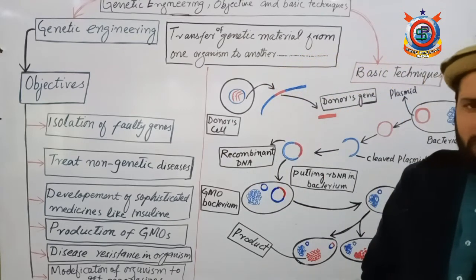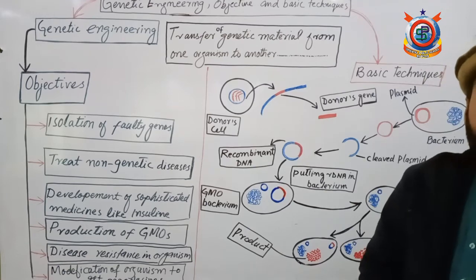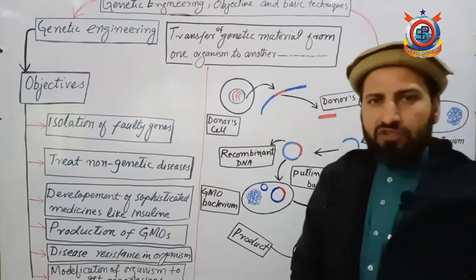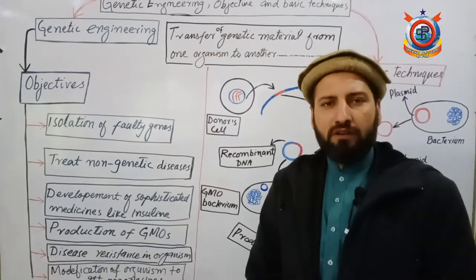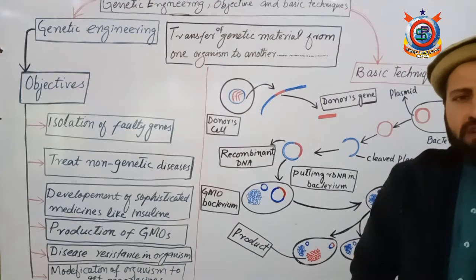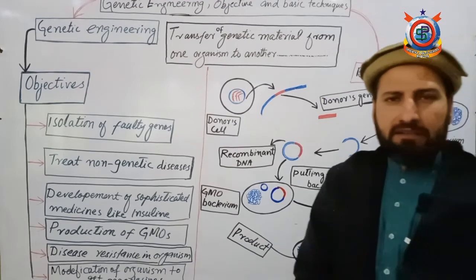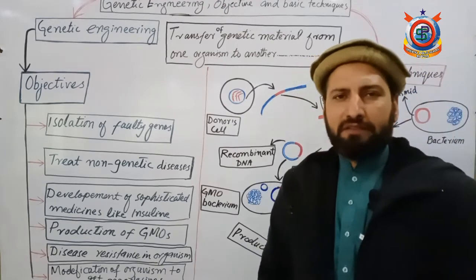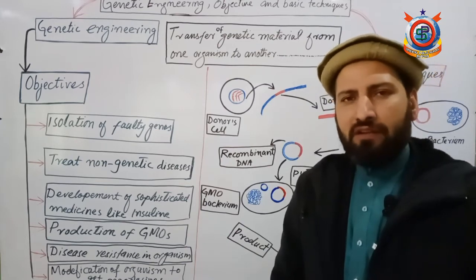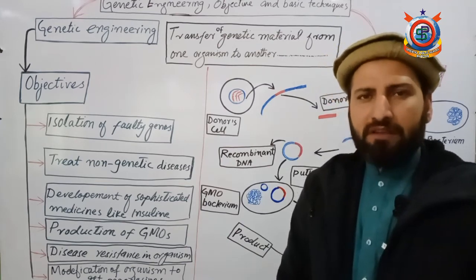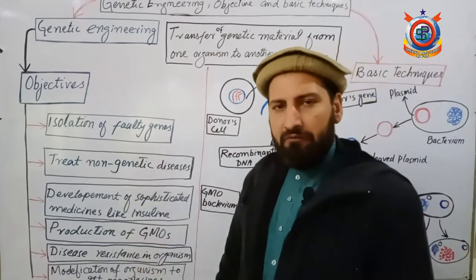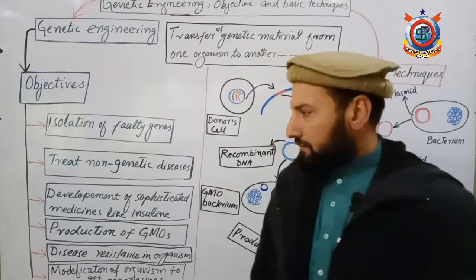Once again: what is genetic engineering? Genetic engineering is a technique — a process — in which a gene is transferred from one organism to another. Now, what are the objectives of genetic engineering? Why do scientists perform genetic engineering and what benefit do we get from it? There are six main objectives, which I will explain one by one.